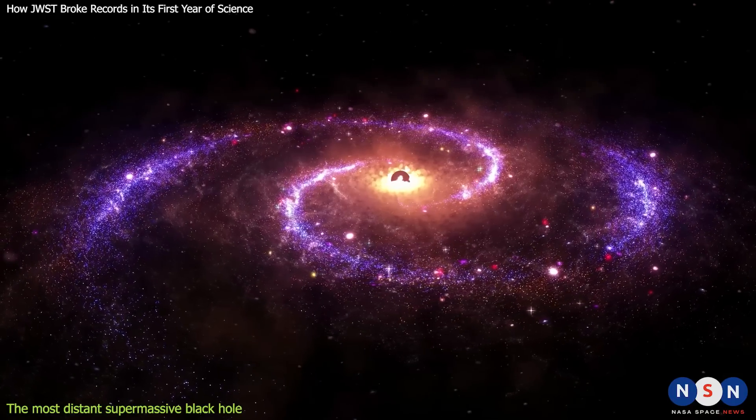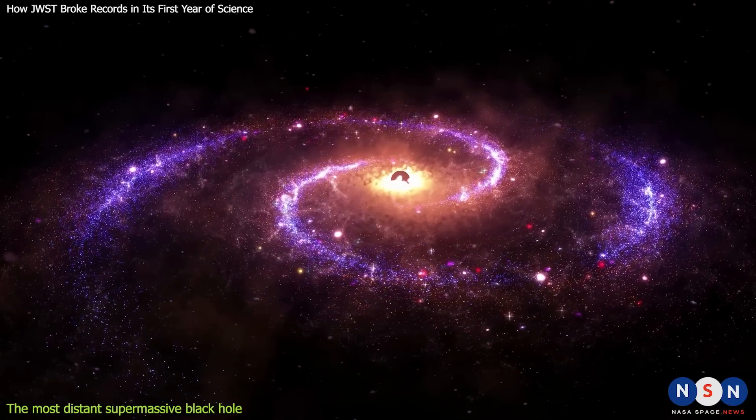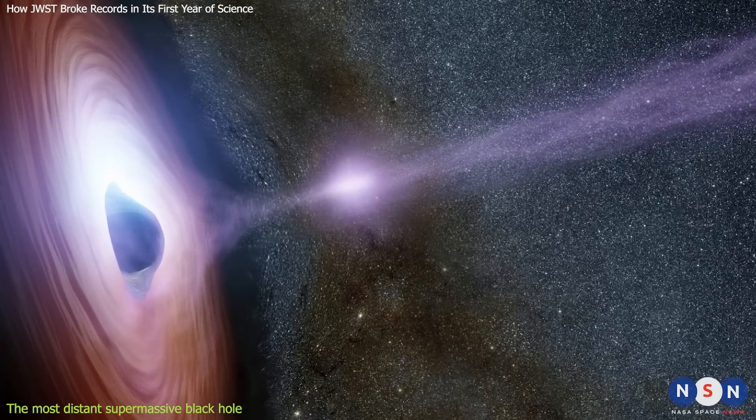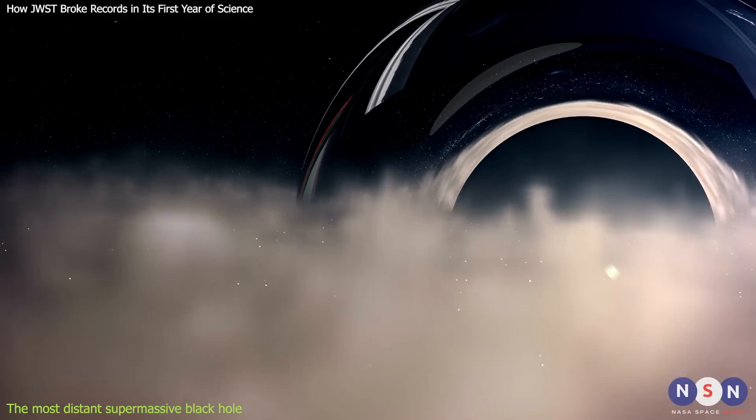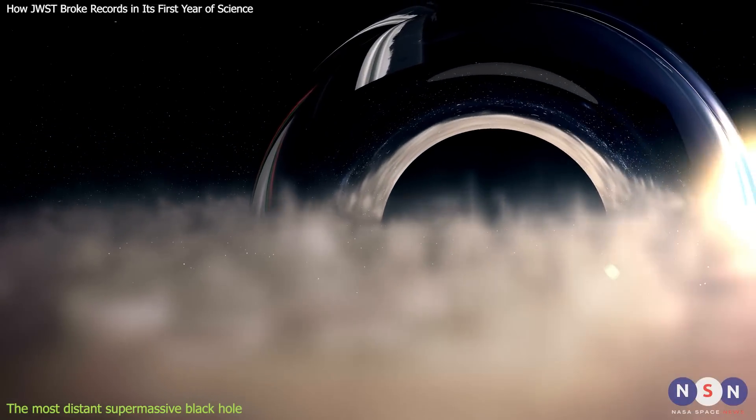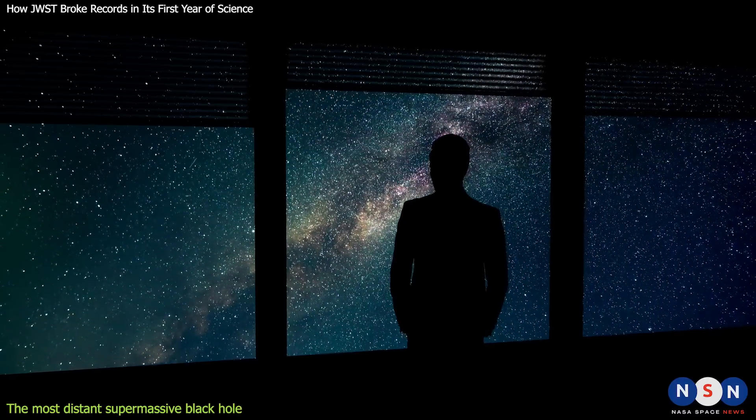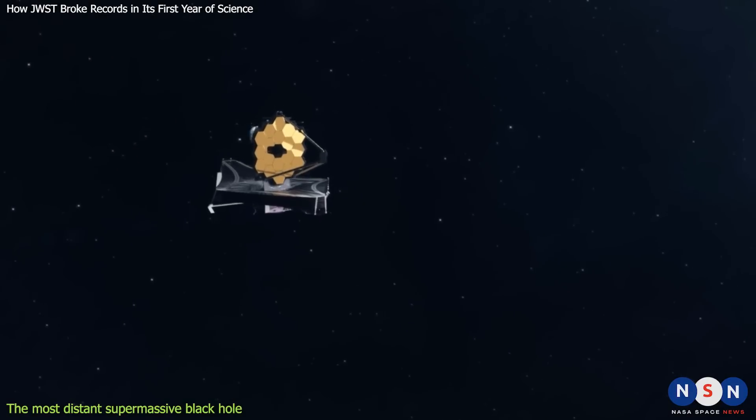These supermassive black holes are usually found at the centers of galaxies, where they can influence their surroundings by emitting powerful jets and radiation. But how did these supermassive black holes form and grow so quickly in the early universe? This is one of the biggest mysteries in astrophysics, and JWST may have found a clue.